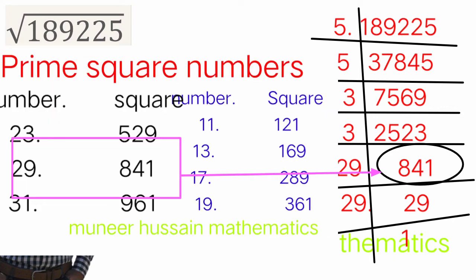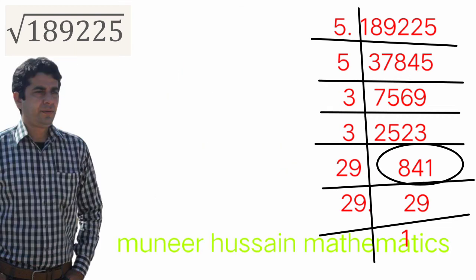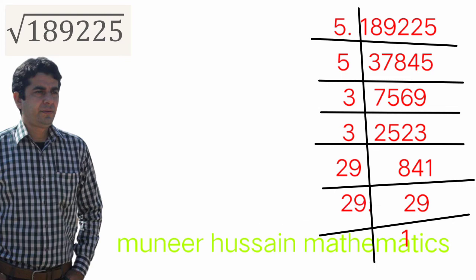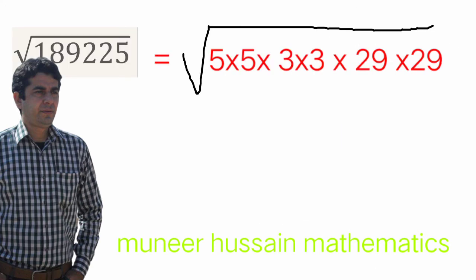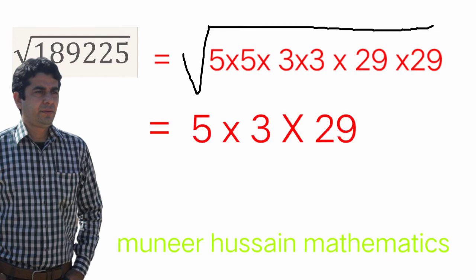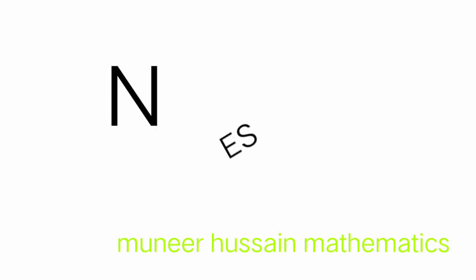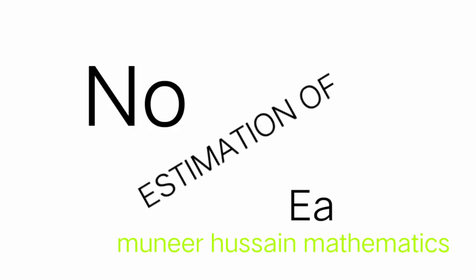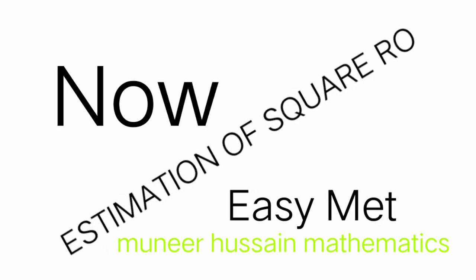And 841 is a prime square number of 29, since 29 × 29 = 841. So we have 189225 = 5² × 3² × 29². Taking the square root, the squares cancel, giving 5 × 3 × 29 = 435. That is our answer. These were two difficult questions of square root — from them you can easily understand the method.